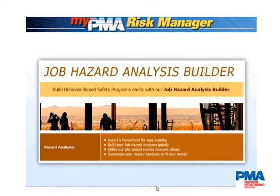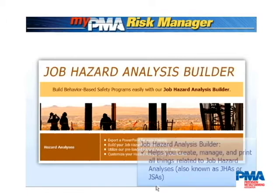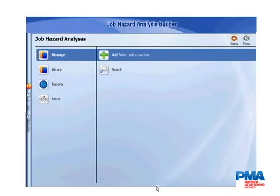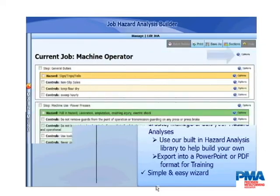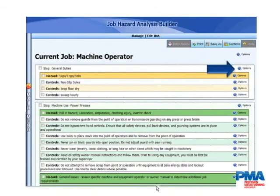The next module is a Job Hazard Analysis Builder, and this program allows you to automate the completion of your JHAs. We have a library of about 100 templates that you can begin to work with, or create your own in terms of a step-by-step.